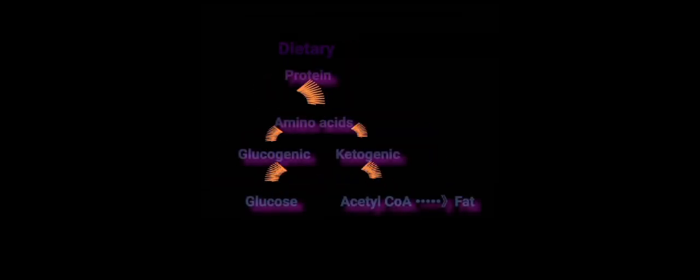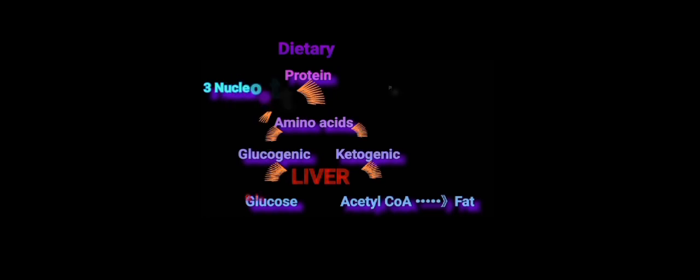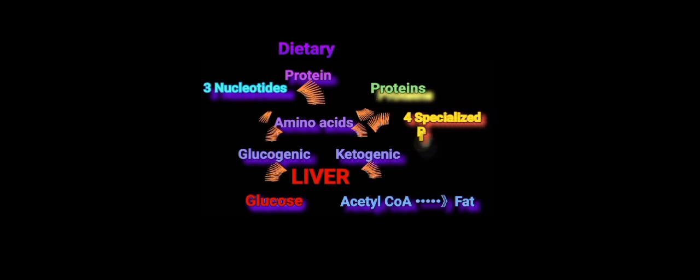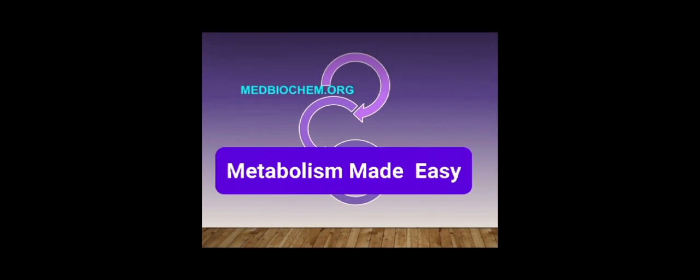The third important use of amino acids is in the synthesis of purines and pyrimidines needed for nucleotide synthesis. The fourth important use of amino acids is in specialized products like heme, catecholamines, and porphyrins.